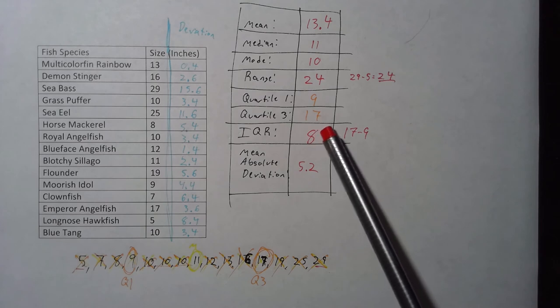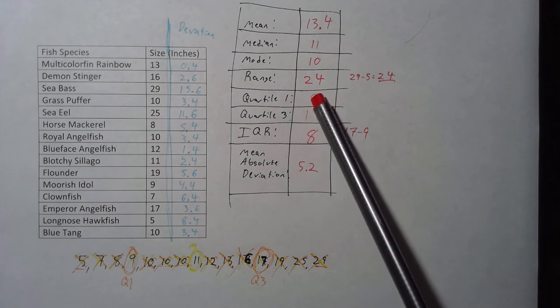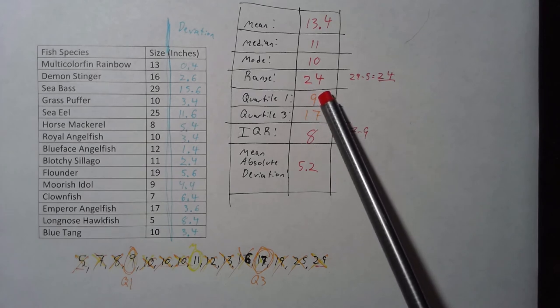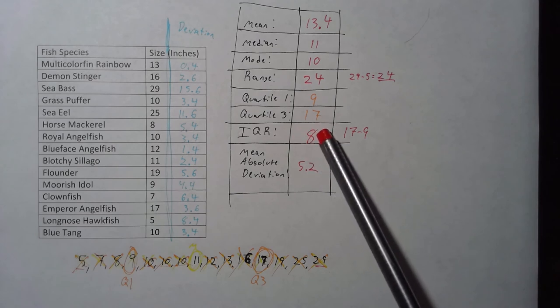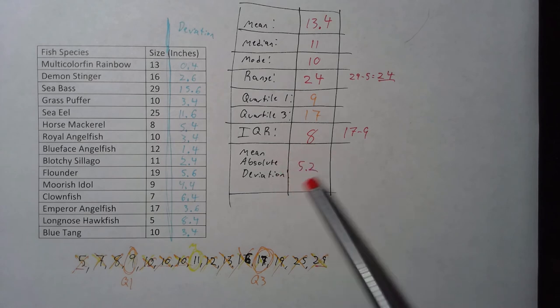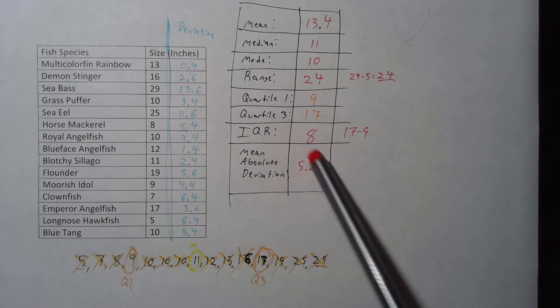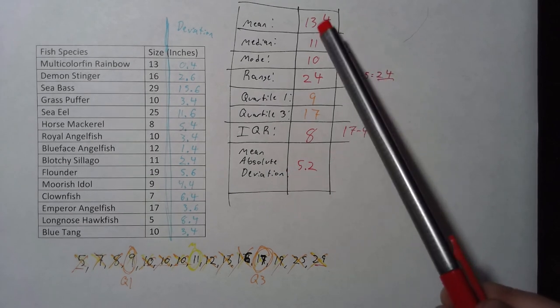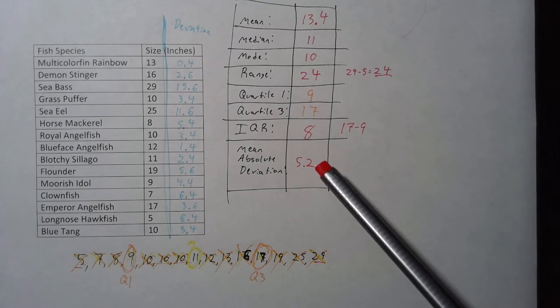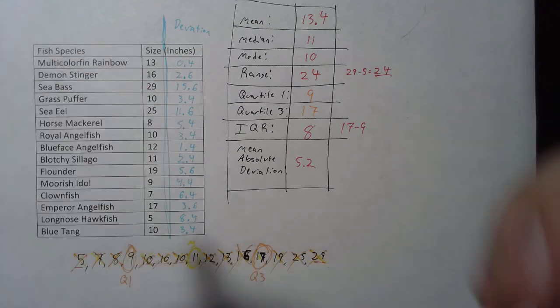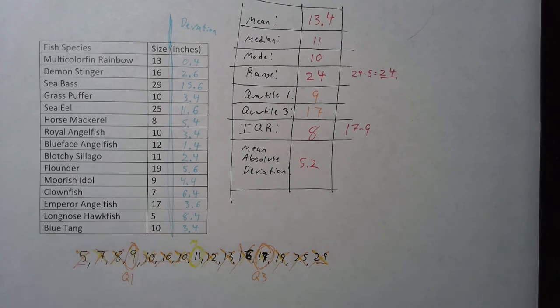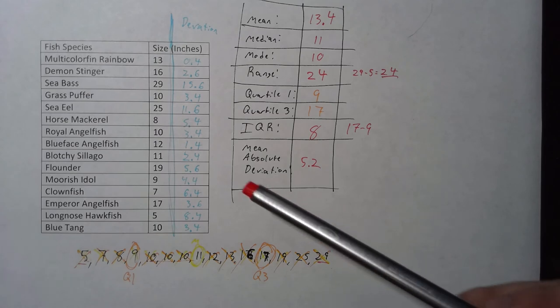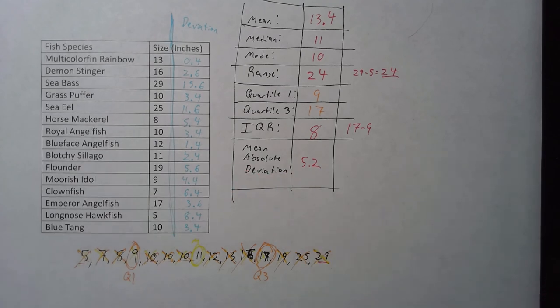Interquartile range is 8. That tells me that between my lower quartile, if I catch a 9 inch fish, that I'm usually not going to get a fish more than 8 inches larger than that. Mean absolute deviation. That tells me how likely, or how spread out my fish are, or how likely I am to catch a fish that is close to 13.4. The smaller that number is, that means your data is going to be very tight. It's going to be very small and condensed. When that number gets bigger and bigger, it means your data gets more spread out. If all of your numbers are really close to 13.4, there's not a lot of deviation, or your numbers aren't spread out, or they're clustering more, and you have less variation.